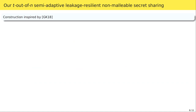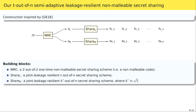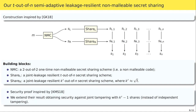Our construction is inspired by Goyal and Kumar and involves a non-malleable code and two distinct secret sharing schemes with different parameters. The non-malleable code outputs a left share and a right share. We apply a joint leakage-resilient secret sharing scheme to the left share realizing a T-out-of-N access structure, and apply another joint leakage-resilient secret sharing scheme to the right share with a reconstruction threshold of approximately √T. The new shares are obtained by concatenating each left share with its respective right share. We obtain leakage and tampering resilience against joint attacks with up to √T shares in the semi-adaptive partitioning model.